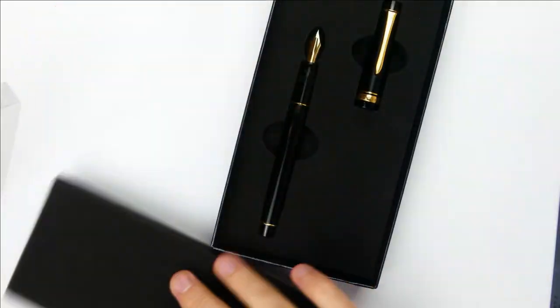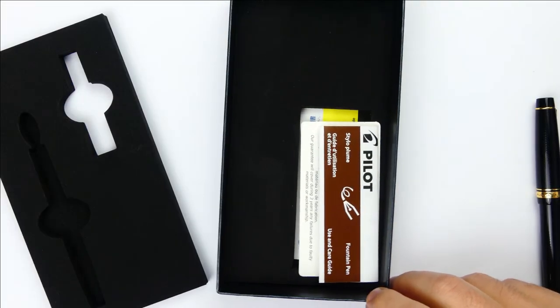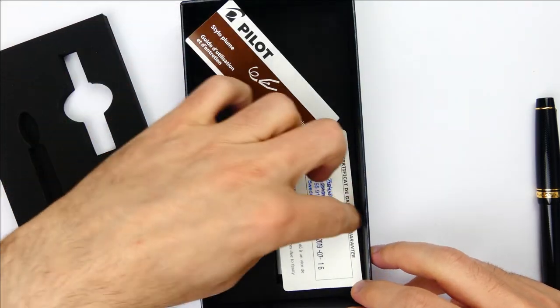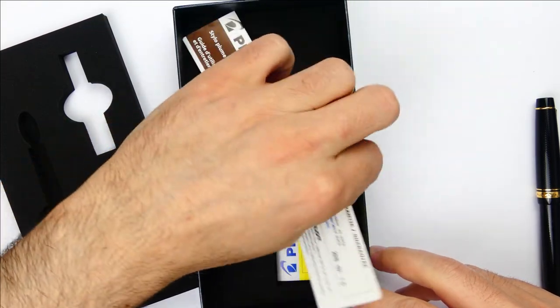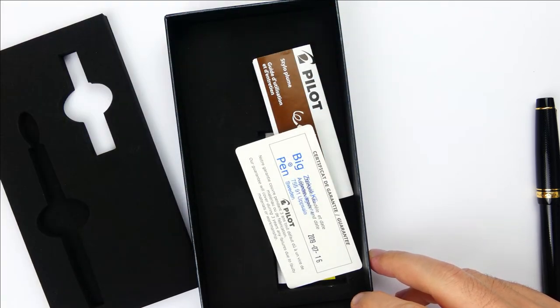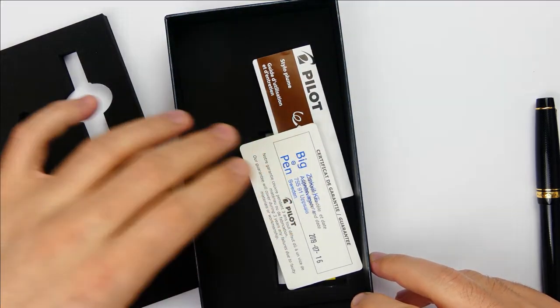When you open the box, inside there is the pen. Under it, there is a black Pilot cartridge and a user guide specific for this particular model. Now let's take a look at the pen.